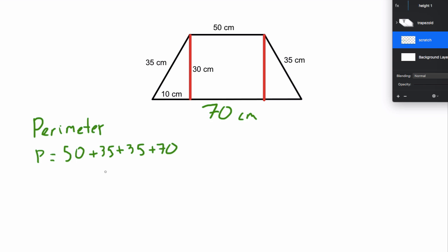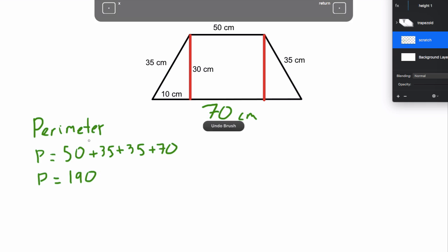You could write this in any order. It's still going to come out the same. So the perimeter equals 190 centimeters. Make sure you have those units. Those units are really important.